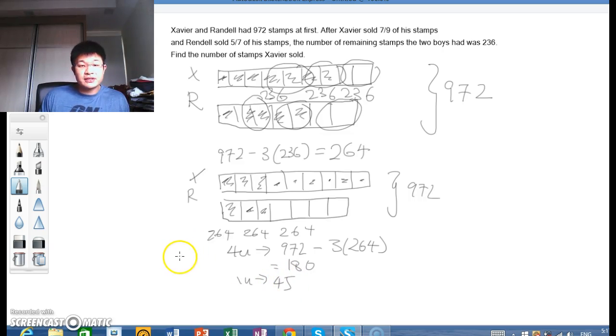This one unit is actually for Randall only. So we want to find Xavier's one unit. We bear in mind that these three units of Xavier and this one unit of Randall is 264.